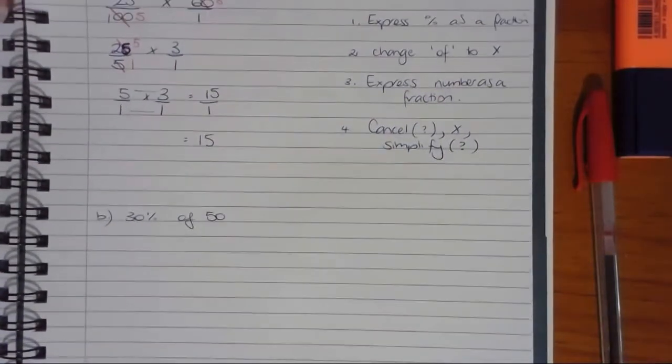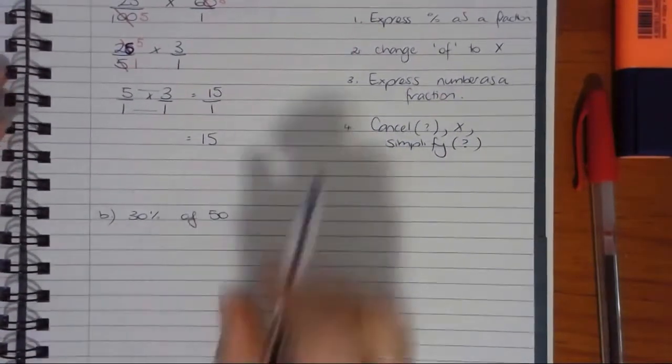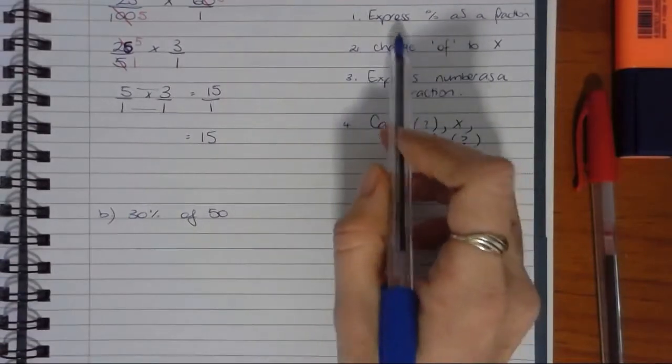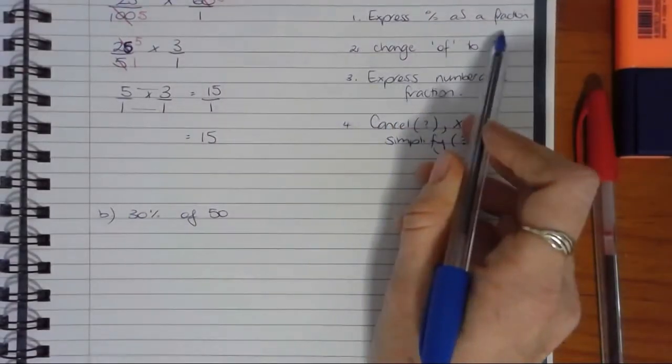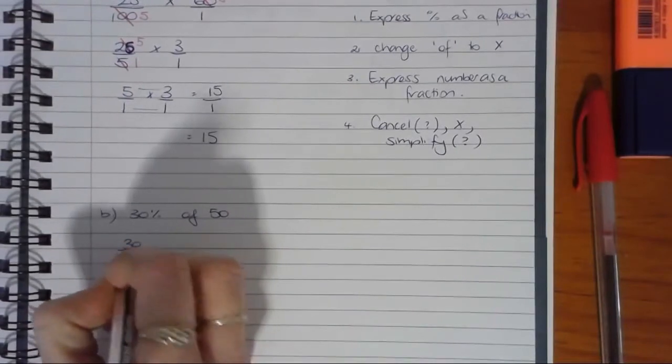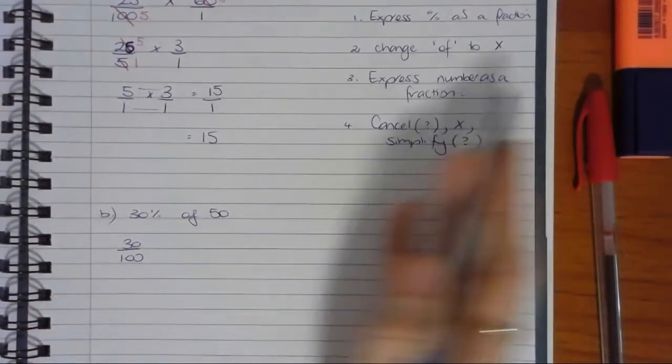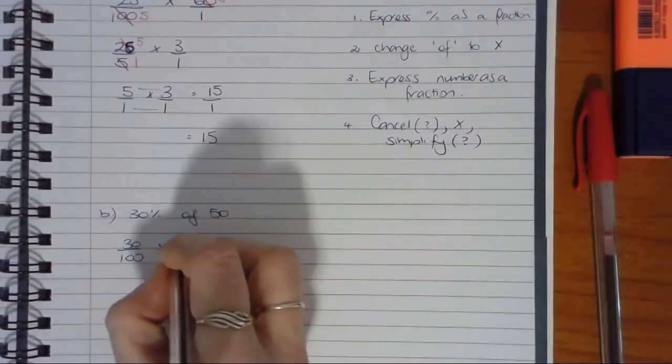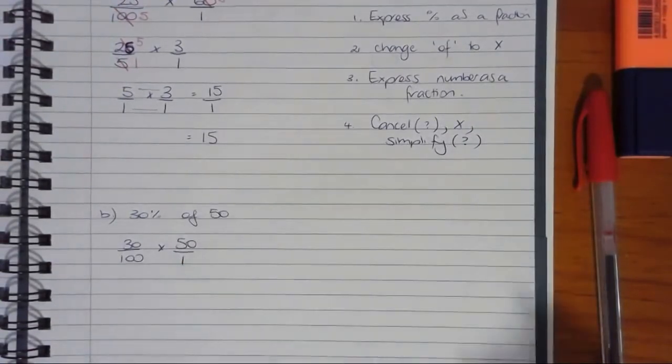I'll try not to make any mistakes in this one. 30% of 50. My first step is to express the percentage as a fraction, so 30 over 100. Change the 'of' to a times. Express the number as a fraction - whenever it's a whole number like that, it's just over 1.